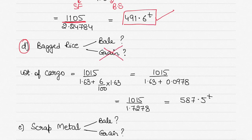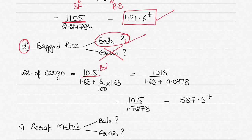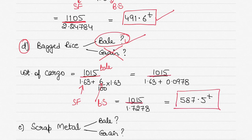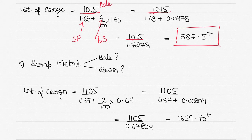Next is bagged rice. As soon as you see 'bagged,' you know you can't use grain capacity — any bagged cargo needs protection and dunnage next to the plating, even if loaded in slings. So we use bale capacity. With bale capacity of 1015, stowage factor of 1.63, and broken stowage of 6% of 1.63, the calculation gives you 587.5 tonnes.